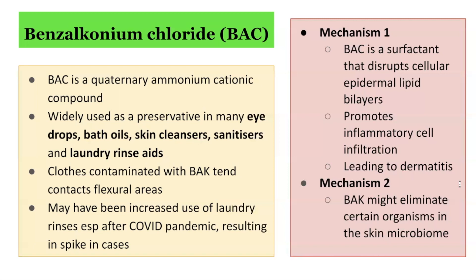As to how benzalkonium chloride can lead to granular parakeratosis, it has been theorized to have two potential mechanisms. The first is that benzalkonium chloride, by acting as a surfactant, disrupts the cellular epidermal lipid bilayers, promoting an inflammatory reaction leading to dermatitis. The second mechanism is that benzalkonium chloride may eliminate certain organisms from the skin microbiome, thereby disrupting it and creating an environment which can allow granular parakeratosis to occur.